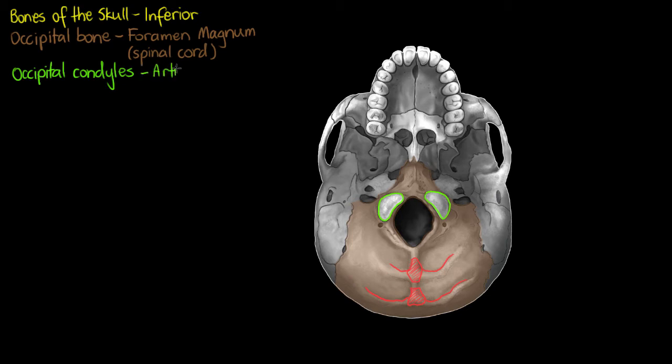Our occipital condyles are the articulation points that interact with our atlas or C1 vertebrae. As soon as the spinal cord leaves through our foramen magnum we are protecting it with bone immediately, showing its importance.